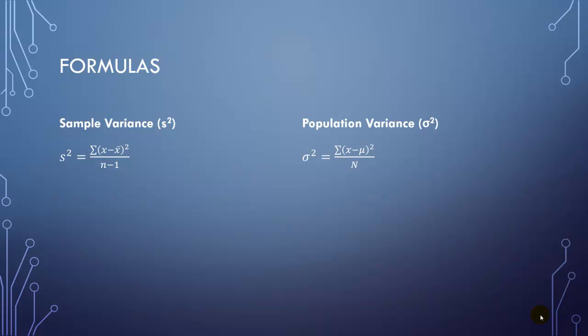So standard deviation. We'll start off with sample standard deviation. The sample standard deviation is just the square root of the sample variance. So in other words, it's the square root of the summation of x minus x̄ squared over n minus 1.